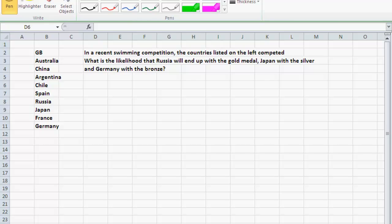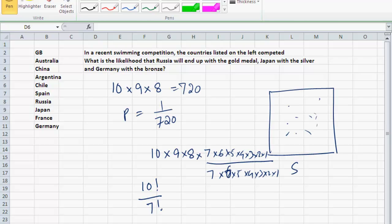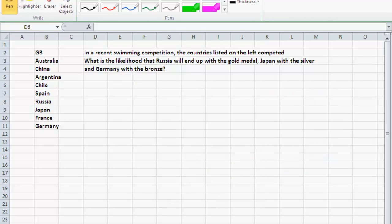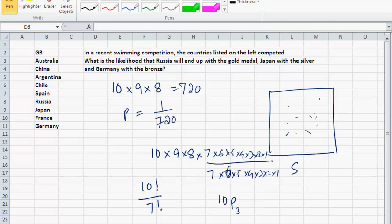Therefore, the permutation that I'm looking for, the way we write it, is ten P three. What is the permutation of ten things taken three at a time? In other words, how many ways can I create sequences of three from a set of ten numbers? I have a situation where order matters and I don't have repetition.